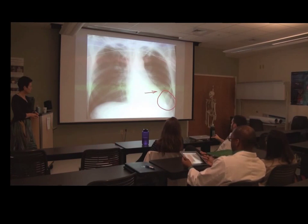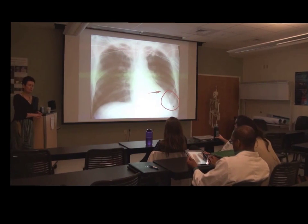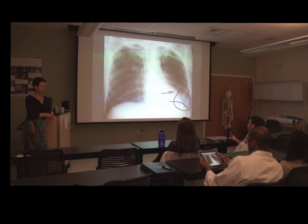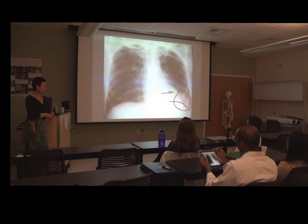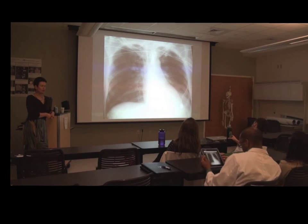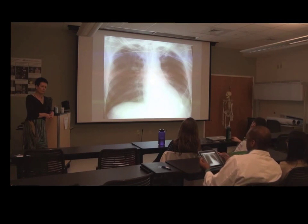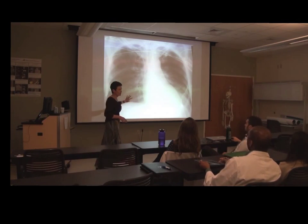You can make out the diaphragm actually better on your tablet than up on the screen. Do you think there's a silhouette sign here? Who votes for a silhouette sign? The heart — the diaphragm. Let me rub that out so we can see underneath. Can we see the left hemidiaphragm? No. So what do you think is going on? This is the left lower lobe — so this is left lower lobe atelectasis. This is by far the most common atelectasis.